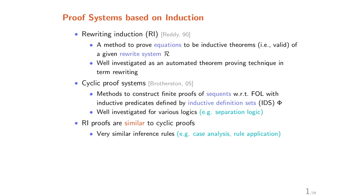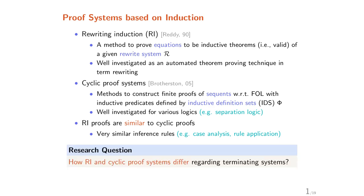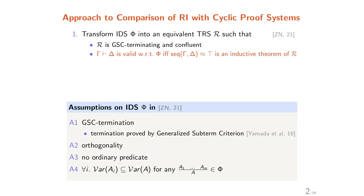We think that rewrite induction proofs and cyclic proofs whose system is terminating are very similar. So here is the question: how do rewrite induction and cyclic proof systems differ regarding terminating systems? To solve this research problem, we would like to compare rewrite induction and cyclic proof systems. Our approach to comparison is transforming rewrite induction proofs and cyclic proofs into each other.